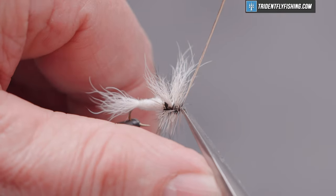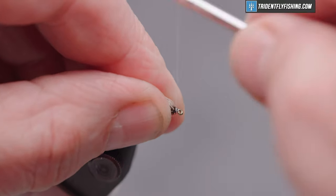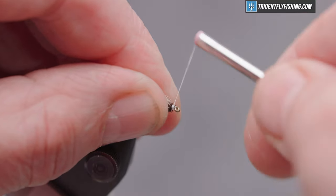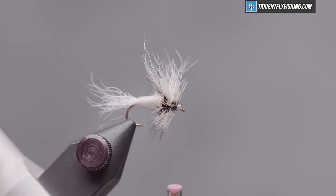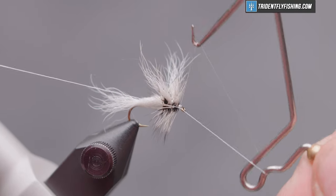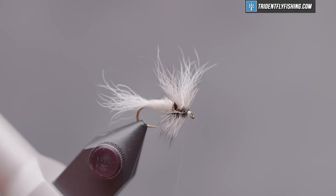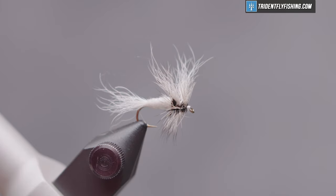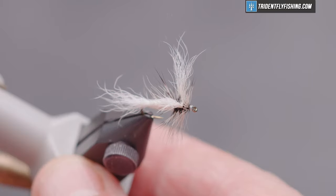Cut off our excess material. Pull our hackle back out of the way. Form a small head. Pick our whip finish tool. Four or five turn whip finish. Seat the knot. Cut our thread. And add a little head cement. This is Loon's water-based. Flick clears out the eye.